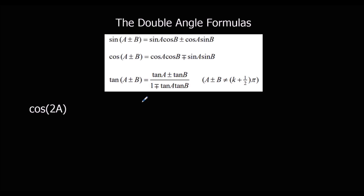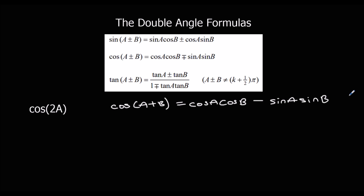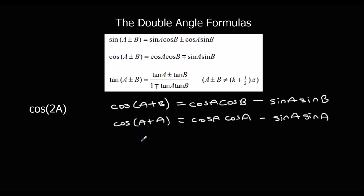For cos(2a) this time, we are again going to start with the addition formula cos(A+B) = cos(A)cos(B) - sin(A)sin(B), and we are going to change the B's to A's. That gives us cos(2a) = cos²(a) - sin²(a).